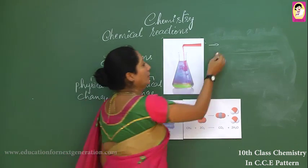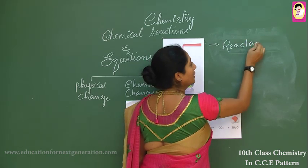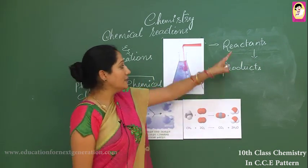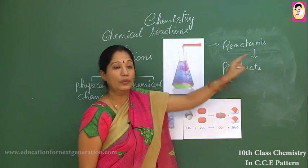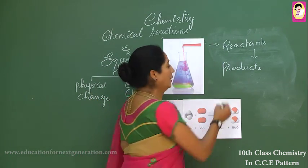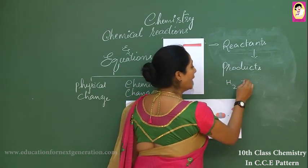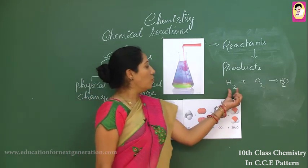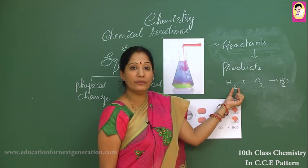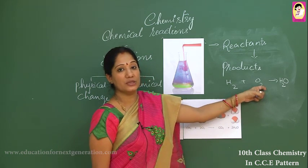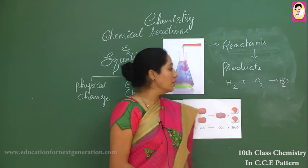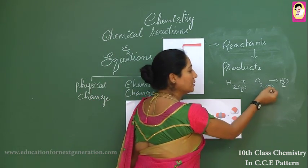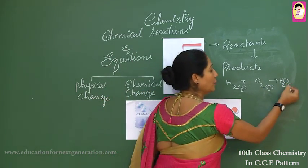The reactants and products are separated by means of an arrow during the course of a chemical reaction. For example, hydrogen reacts with oxygen to give rise to a water molecule. One molecule of hydrogen — two atoms of hydrogen — reacts with one molecule of oxygen — two atoms of oxygen — giving rise to one water molecule. Here hydrogen is a gas, oxygen is a gas, but the component obtained is a liquid, a colorless liquid.